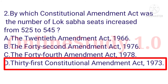Question number 2: By which constitutional amendment act was the number of Lok Sabha seats increased from 525 to 545? The answer is option D: the Thirty-First Constitutional Amendment Act, 1973.